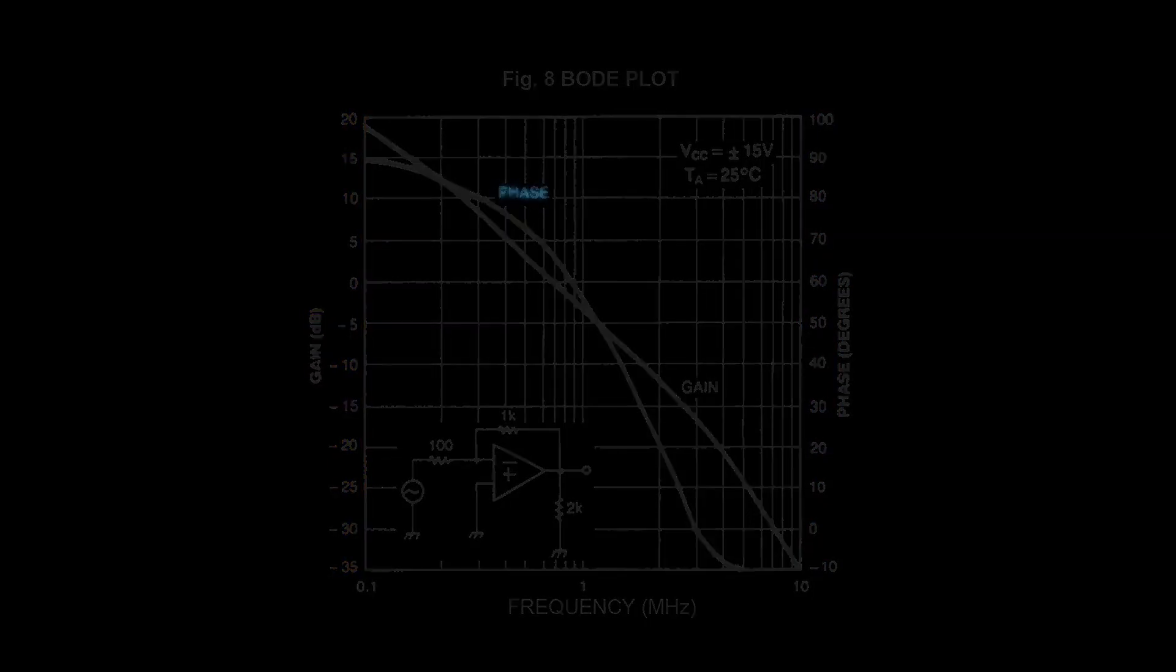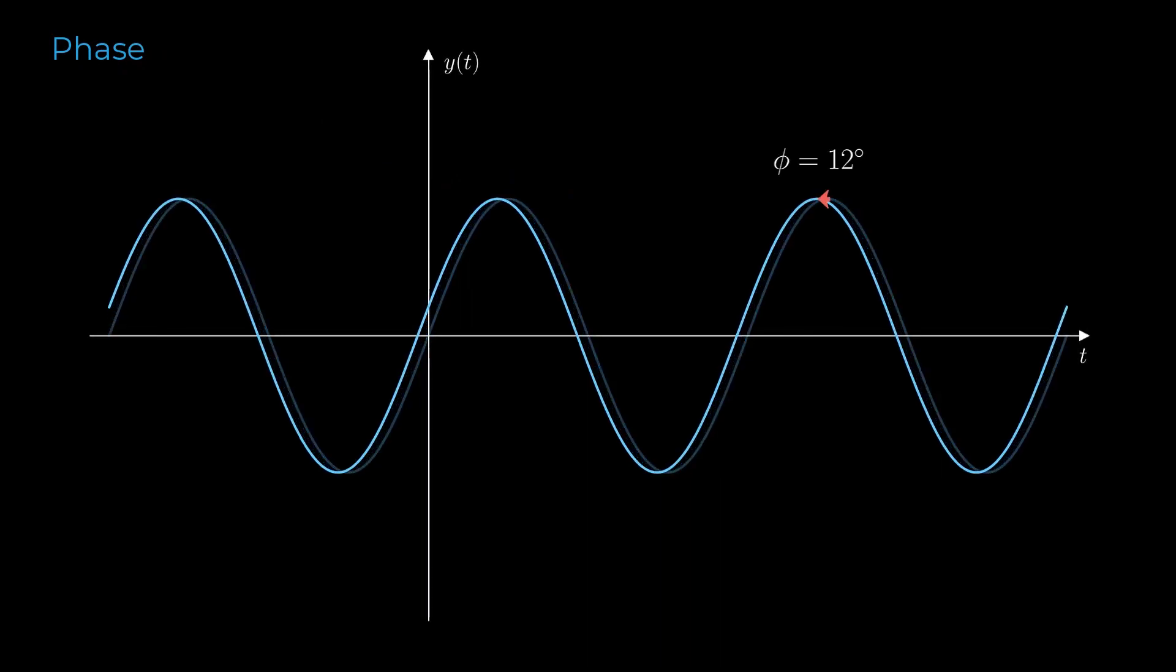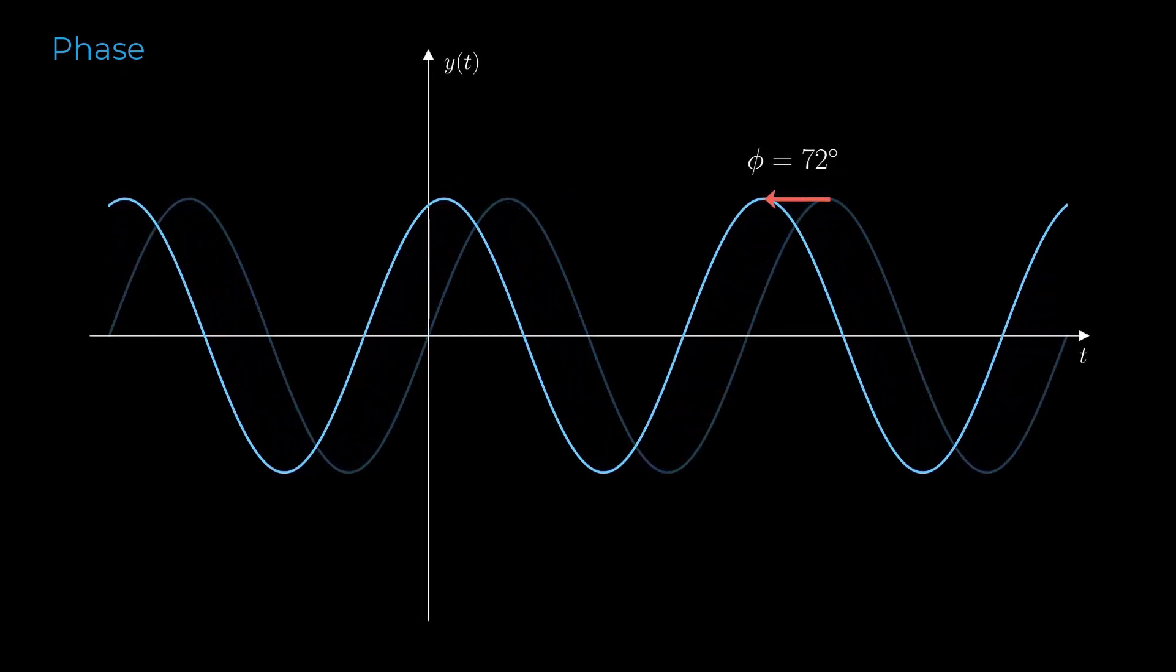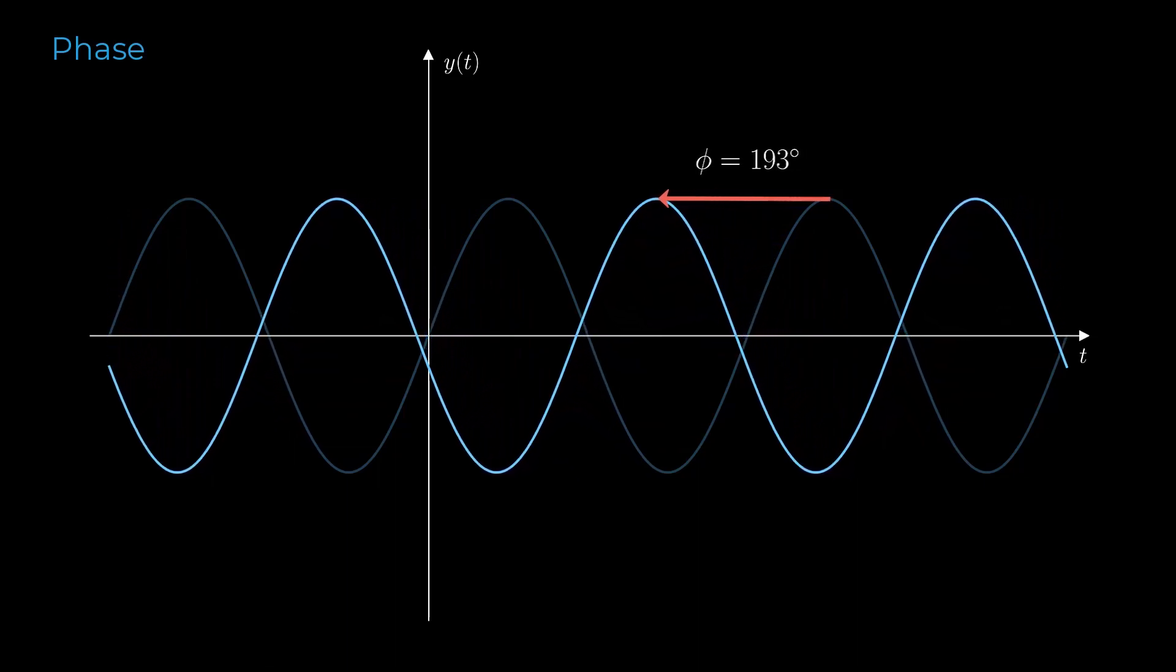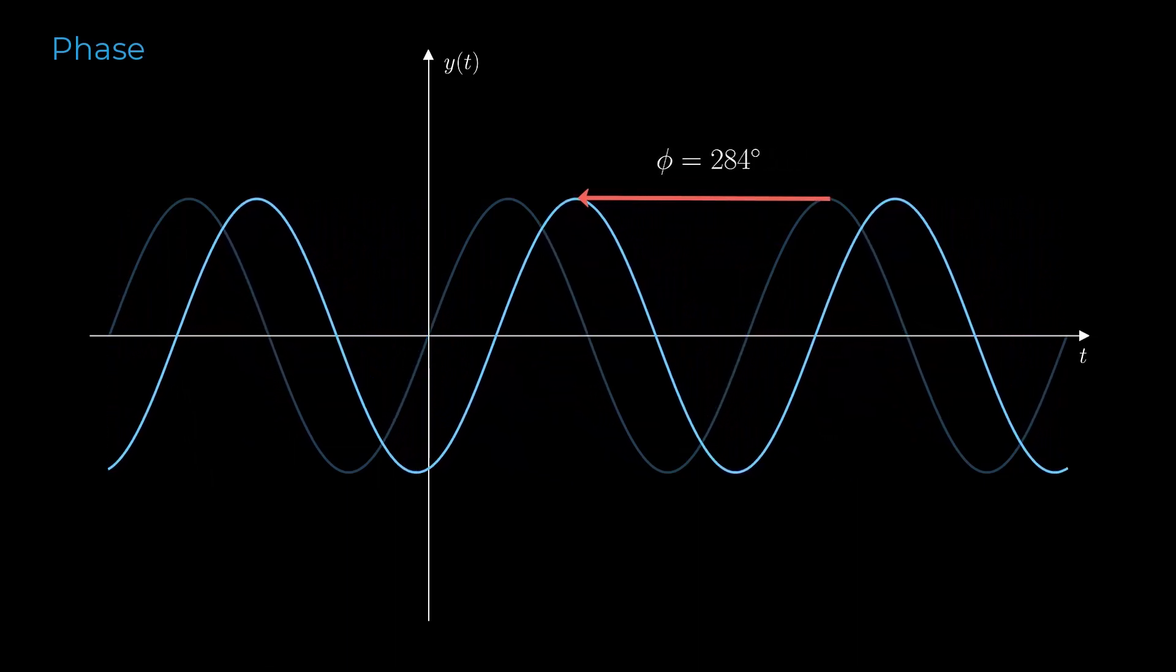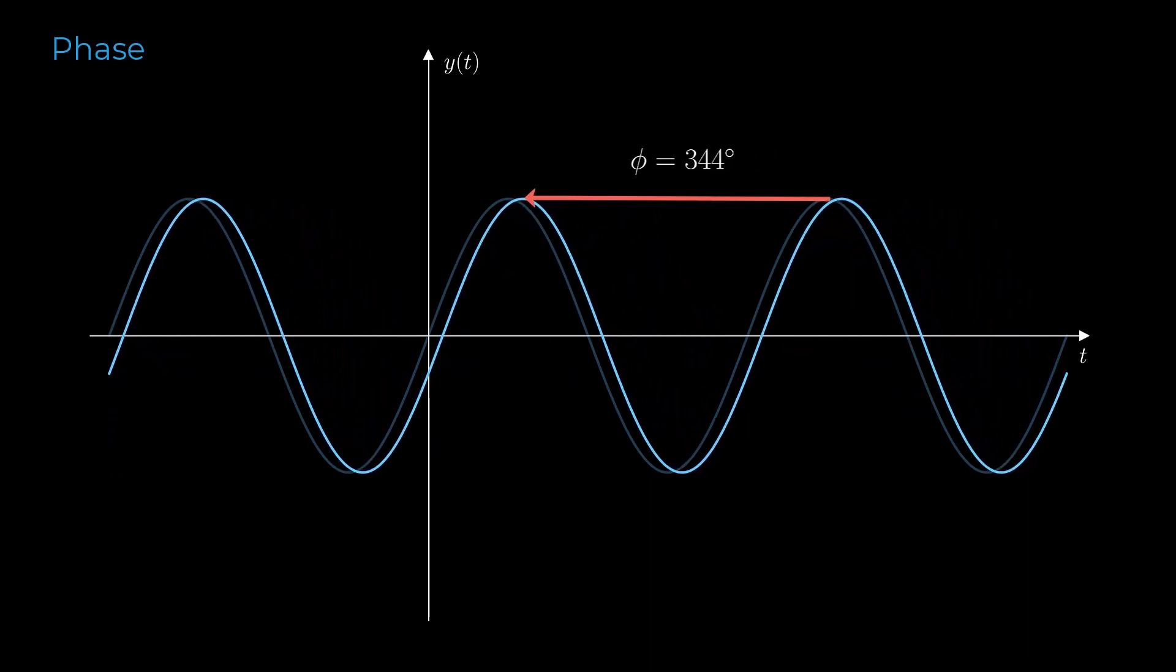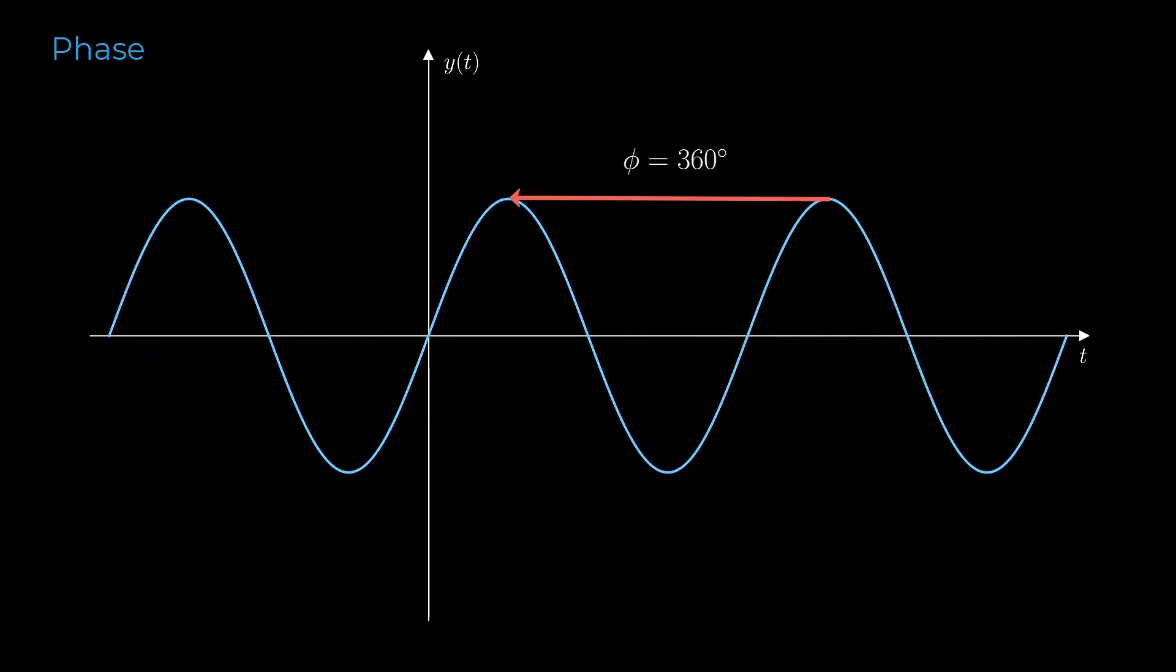Phase and gain aren't complicated concepts on their own. Phase is how far a sinusoid has been shifted along a horizontal axis, relative to its period. Phase is typically measured in degrees. A phase shift of 360 degrees corresponds to a shift of one period.